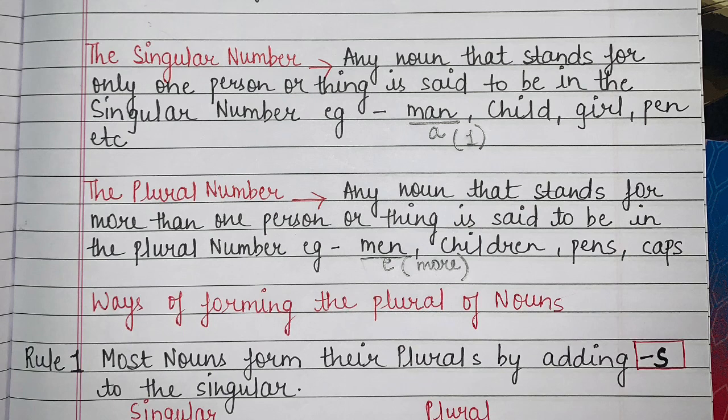The singular number: any noun that stands for only one person or thing is said to be in singular number. Examples: man, child, girl, pen, etc. When we talk about 'man,' we are talking about only one man — we are not talking about many men. We are talking about one single man.